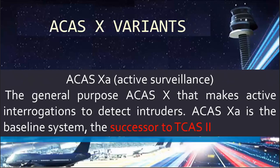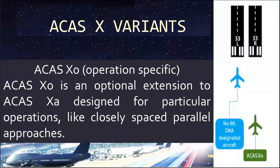The different ACAS-X variants are: ACAS-XA for active surveillance — the general purpose ACAS-X that makes active interrogations to detect intruders. ACAS-XA is the baseline system and the successor to TCAS II. ACAS-XO is for operation-specific scenarios, like closely spaced parallel approaches, for which it will not generate nuisance alerts.